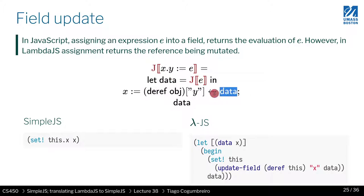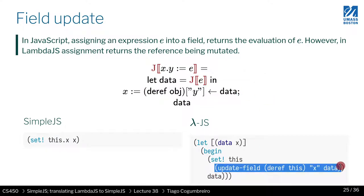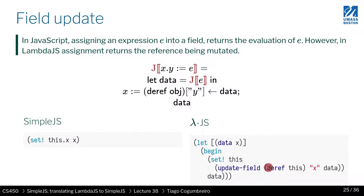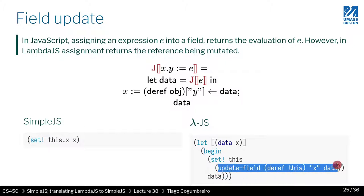We look up the object and perform an update. The object is immutable, so when you update it, that returns a new object. In the JS code, you take the reference of x to obtain the object — since x is a reference to an object, you dereference it, performing a heap get in memory, which returns an immutable object. Then you update the field.